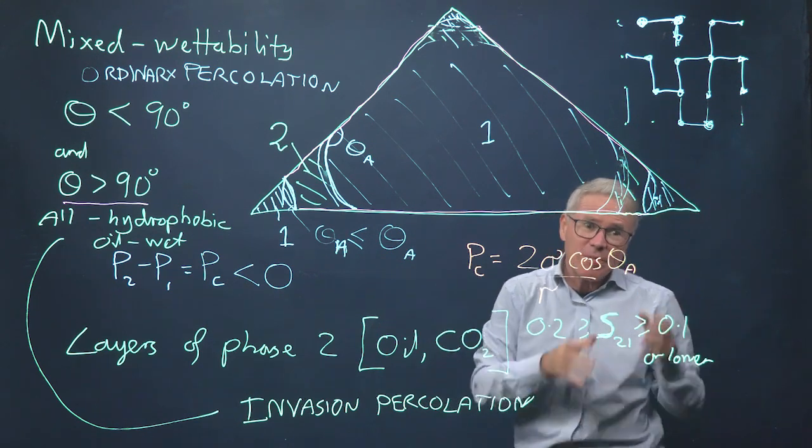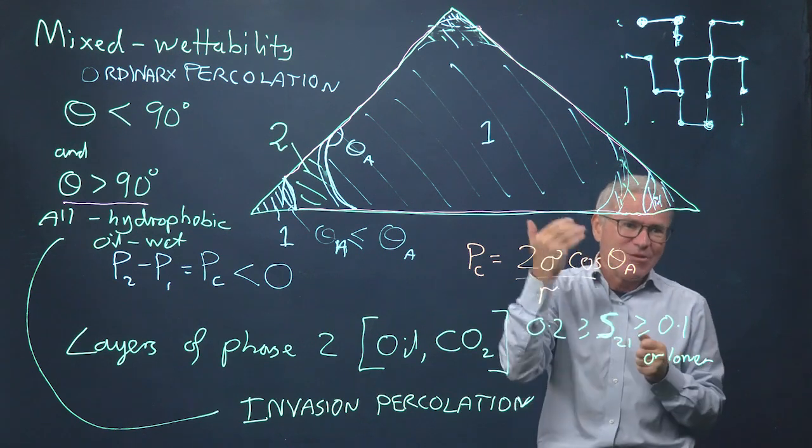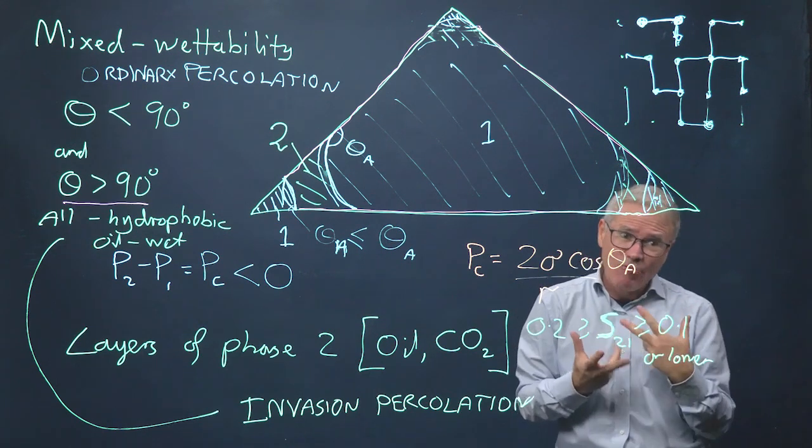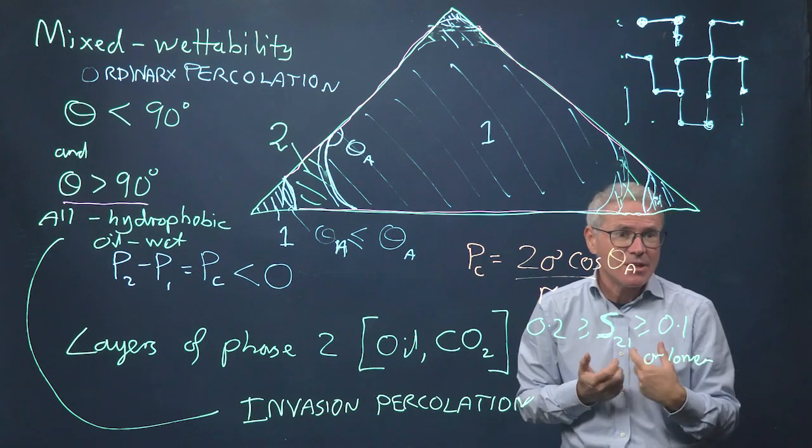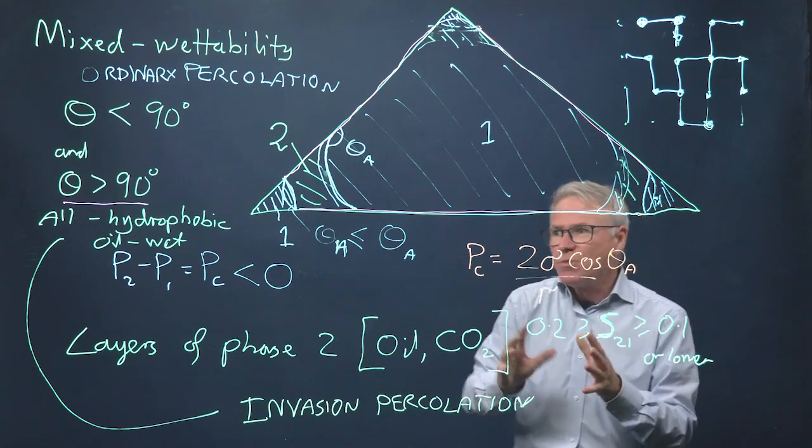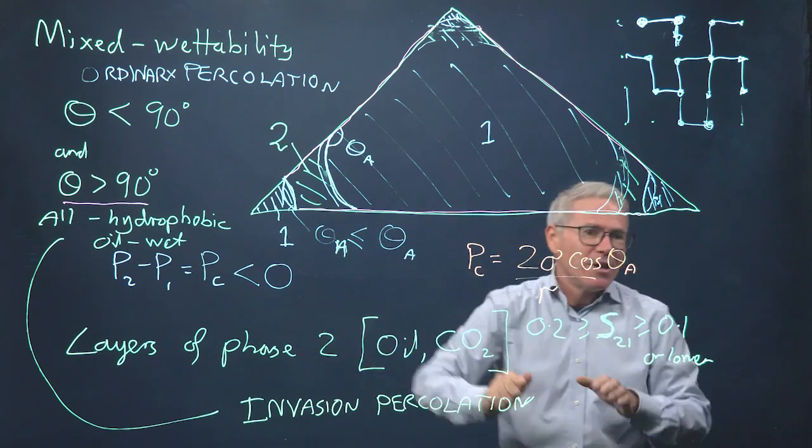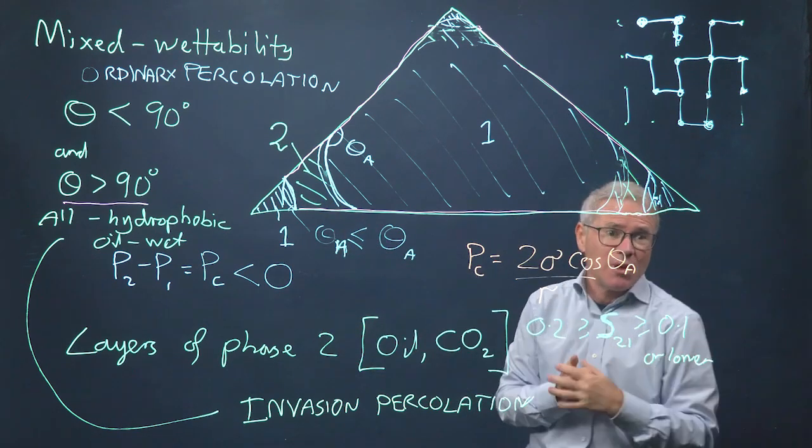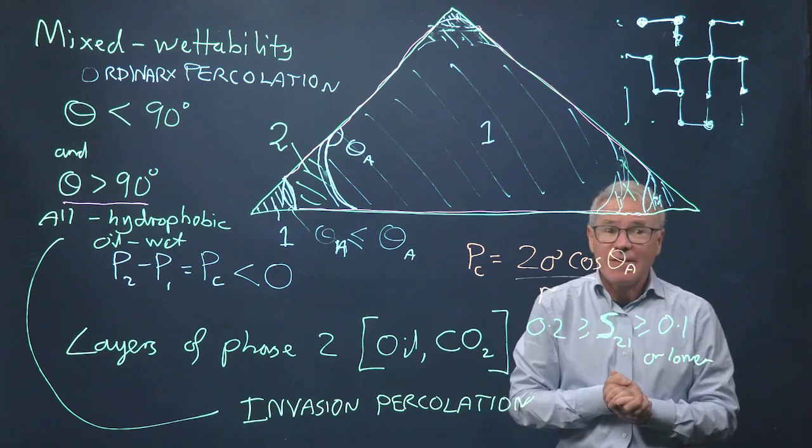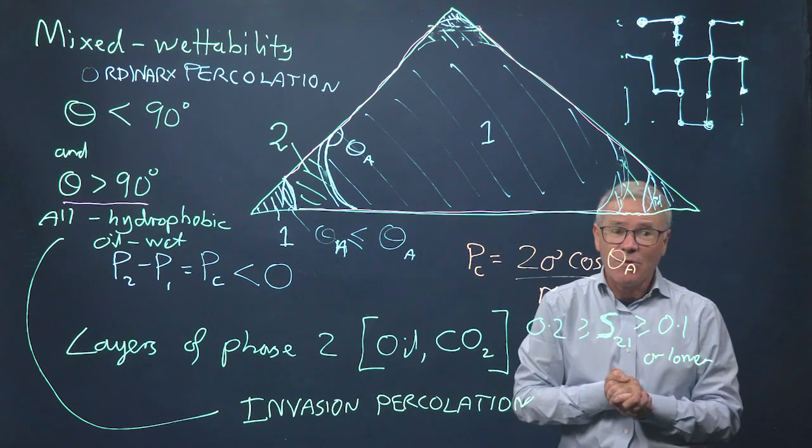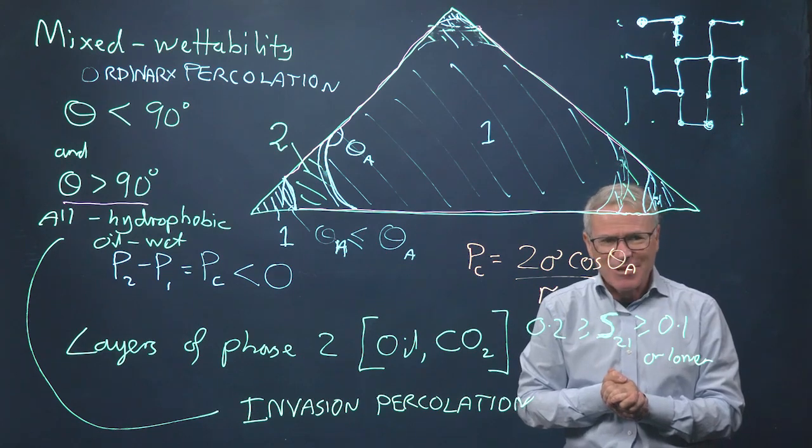But broadly speaking, if we have something that's strongly wetting, then the water moves in as a percolation process. It becomes mixed-wet, it remains a percolation-like process. And it's only when you move towards more strongly hydrophobic or oil-wet conditions that you flip towards something that's principally invasion percolation. And that is going to have major consequences for fluid production. Thank you very much.